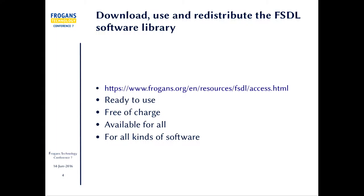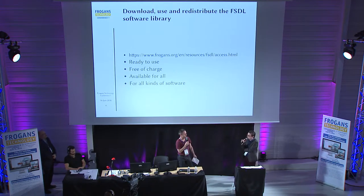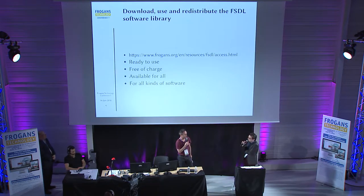In English it's just 'software library.' The library is on frogans.org — www.frogans.org/en/resources/fsdl/access.html. It's ready to use, free of charge, available for all. It's on Linux, Windows, and Mac OS. It's available for all kinds of software. You can download it for free, use it for free, and redistribute it for free as well — no royalties to redistribute it if you decide to do so.